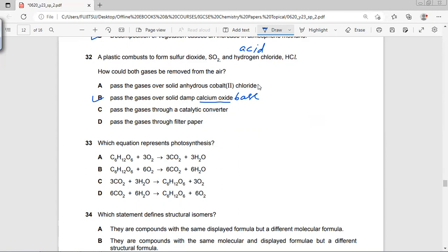Because metal oxide is a base, so a base can neutralize these both acidic gases. The rest won't work. The first one is obviously to remove the steam, and catalytic converter is not going to affect these two gases, or obviously not filter paper.